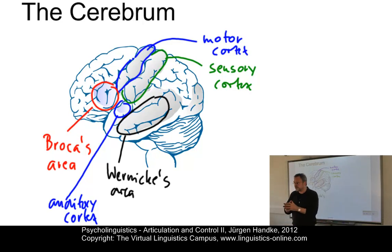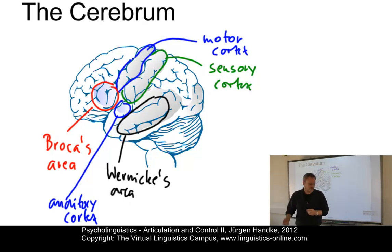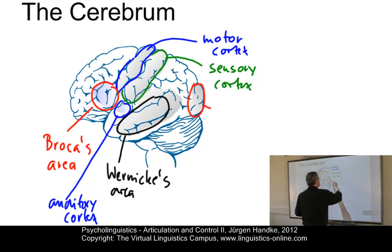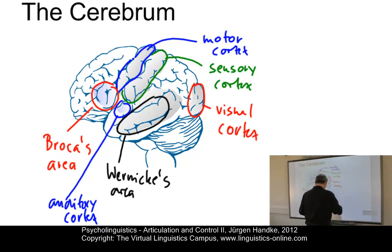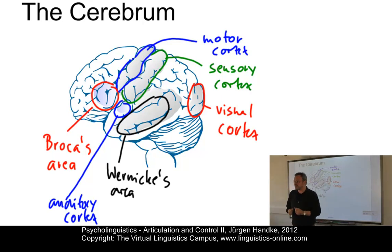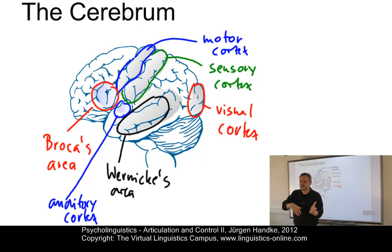The auditory cortex has some specialized speech auditory functions that are not found in the corresponding areas of the right hemisphere. Finally, we need a controlled mechanism for vision — the visual cortex. Within the visual cortex, extraordinary specializations of cells can respond to particular orientations of an edge and other forms.